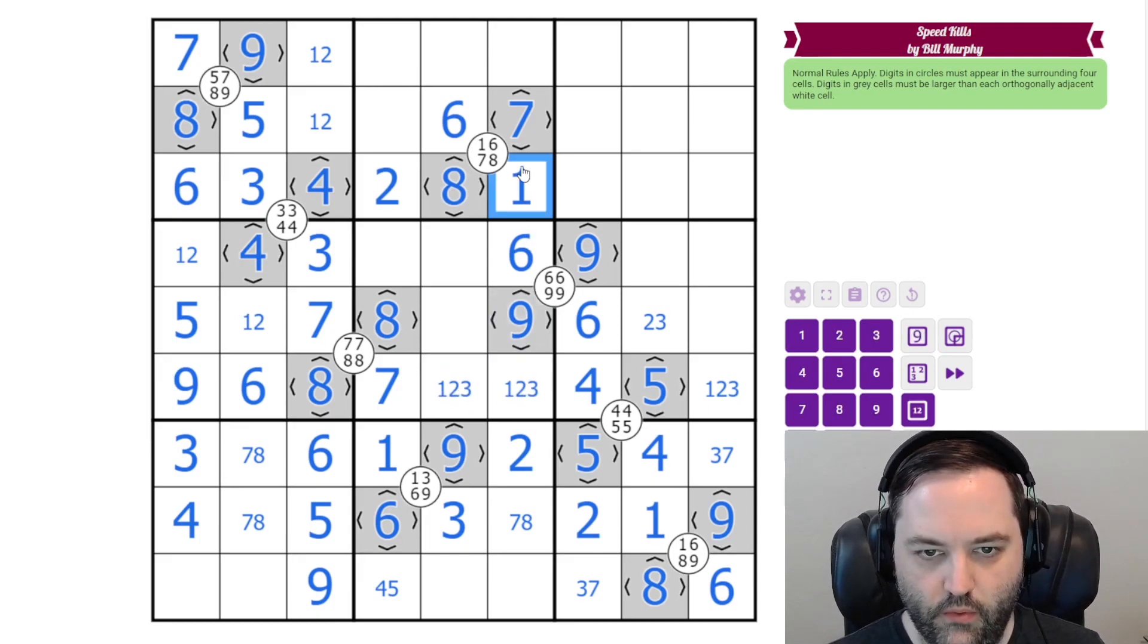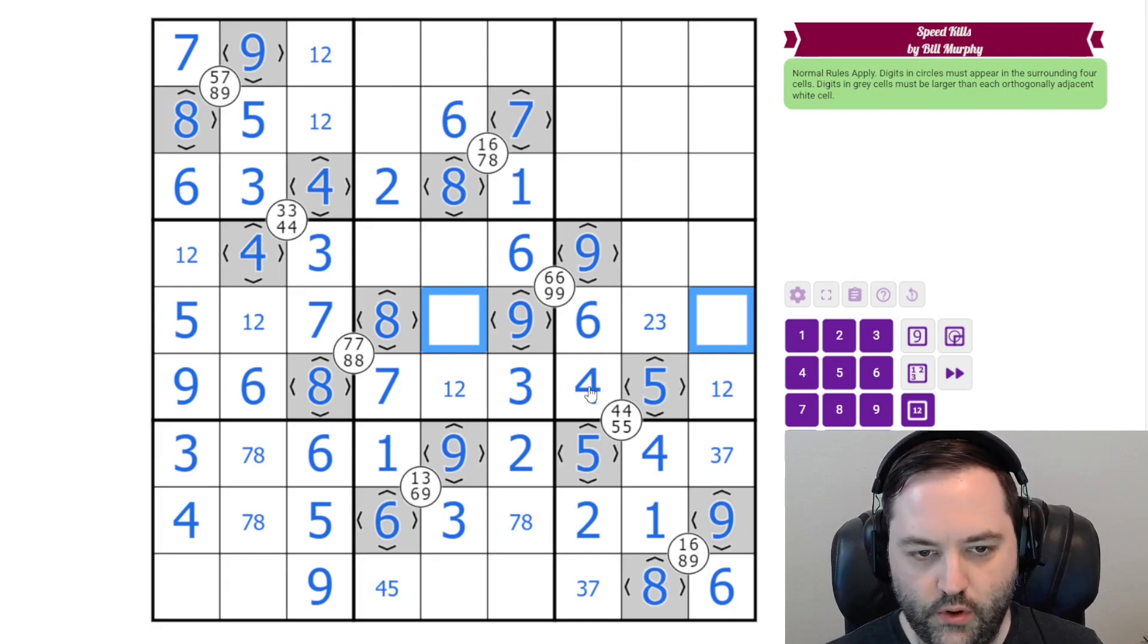So we're left with 1, 2, 3 in the row. 1 and 2 here give a 3. That's not 3. We have 1, 2, 3, 4 in this row. The 4 here rules it out of there. So this is the only place for 4 in the row.